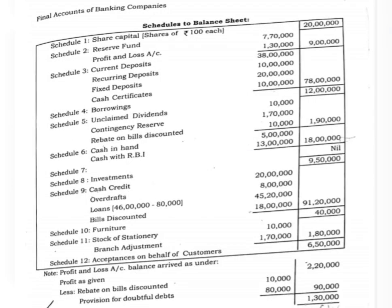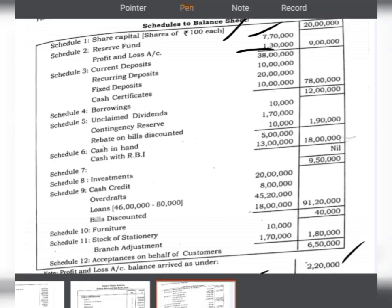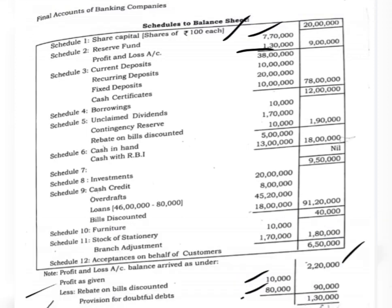Now let us see the solution. We can see the different notes to the balance sheet starting with note number 1, that is share capital. The amount of 20,00,000 share capital is shown in note number 1. Note number 2 is with regard to reserves and surplus. Under this we are showing reserve fund of 7,70,000 and profit and loss account balance of 1,30,000, which is after making the adjustment. First we write the credit balance as given in the question, that is 2,20,000. The adjustments are: rebate on bills discounted 10,000, and provision for doubtful debts 80,000 — together 90,000 has to be deducted from 2,20,000, leaving a remaining balance of 1,30,000. That has been added to the reserve fund to get total reserves and surplus amounting to 9,00,000.